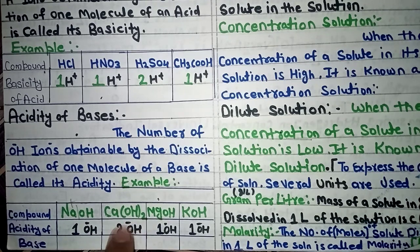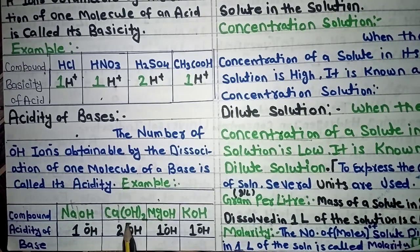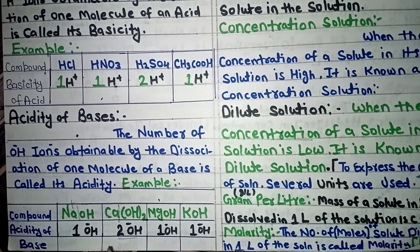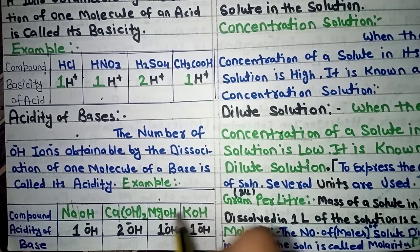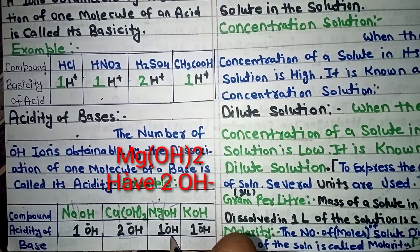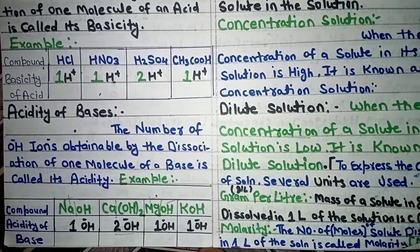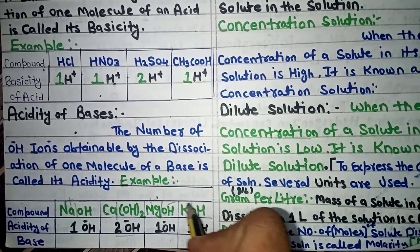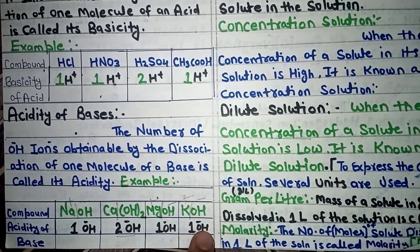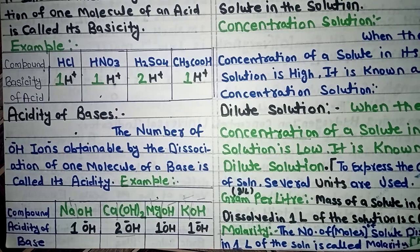For calcium hydroxide Ca(OH)2: when dissociated, it gives 2 molecules of OH⁻, so its acidity is 2. Similarly, magnesium hydroxide Mg(OH)2: when broken down, it gives Mg2+ plus 2 OH⁻ — there is 1 OH released here (for the monobasic form), so the acidity is 1. So bachon, acidity of base and basicity of acid should now be clear to you. Next we move to concentration of acid and base.